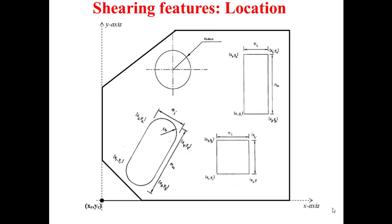For the location of these shearing features, as indicated in this figure, we have a polygonal sheet metal blank depicted by the bold line, and a reference system composed of the horizontal X axis and the vertical Y axis, with the reference point located by its coordinates XR, YR, as explained in the previous video. On this sheet metal blank, we have a hole which can be considered as a circular slot, an inclined oval slot, a rectangular slot, and a square slot.